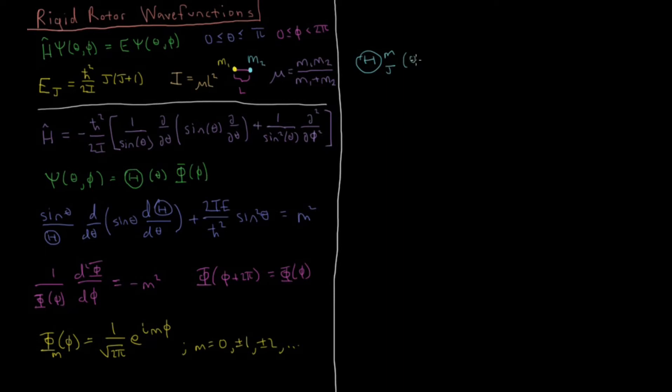And that's a function of the variable theta, the polar angle, equals a big normalization constant which is 2j plus 1 over 2, times j minus the absolute value of m factorial over j plus the absolute value of m factorial. So that's all a big normalization constant.